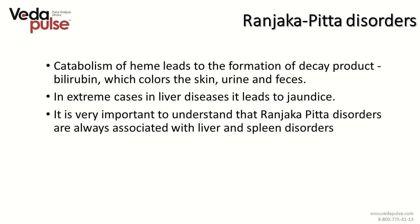As a result of the degradation of heme enzymes and cells, bilirubin is produced, which has a strong coloring effect, dyeing the body yellow. So there is a chance that people of Pitta-Vata constitution with ranjaka malfunction may have a tendency to yellowish pigmentation.